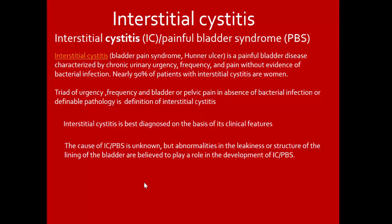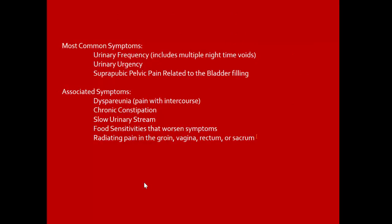Or definable pathology is the definition of interstitial cystitis. It is basically diagnosed based on its clinical features. The cause of painful bladder syndrome is unknown, but abnormalities in the structure of the lining of the bladder are believed to play a role. Most common symptoms: urinary frequency with multiple nighttime voids, urinary urgency, suprapubic pelvic pain. Associated symptoms include dyspareunia, chronic constipation, slow urinary stream, food sensitivities, and radiating pain in the groin, vagina, rectum, or sacrum.